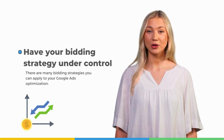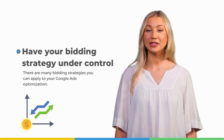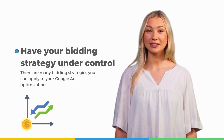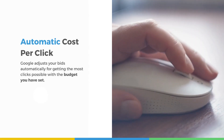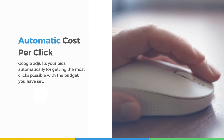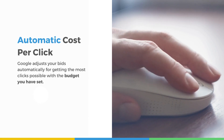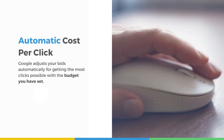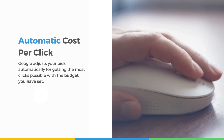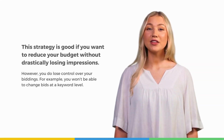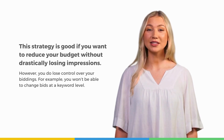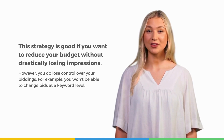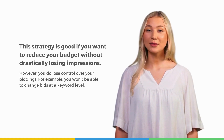Have your bidding strategy under control. There are many bidding strategies you can apply to your Google Ads optimization. With Automatic Cost Per Click, Google adjusts your bids automatically for getting the most clicks possible with the budget you have set. This strategy is good if you want to reduce your budget without drastically losing impressions. However, you do lose control over your biddings — for example, you won't be able to change bids at a keyword level.